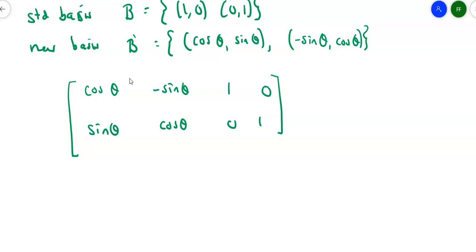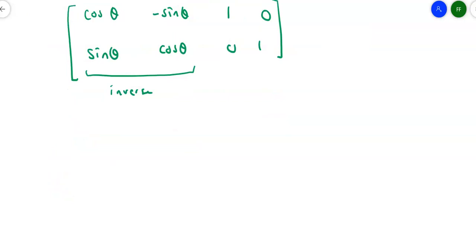In order to convert between the two of them, I'm going to need a transition matrix. We want to go from the old to the new, so the new one goes first. The transition matrix has columns [cos θ, sin θ] and [-sin θ, cos θ], and then [1,0; 0,1]. What I want to do is find the inverse of this. The determinant of that matrix is cos²θ minus negative sin²θ, which equals 1. So the transition matrix is just switching things around.